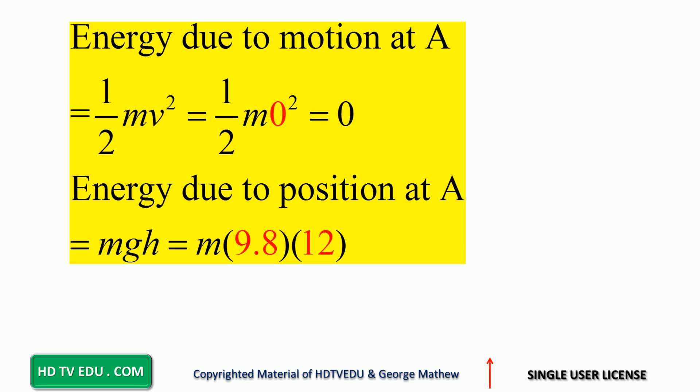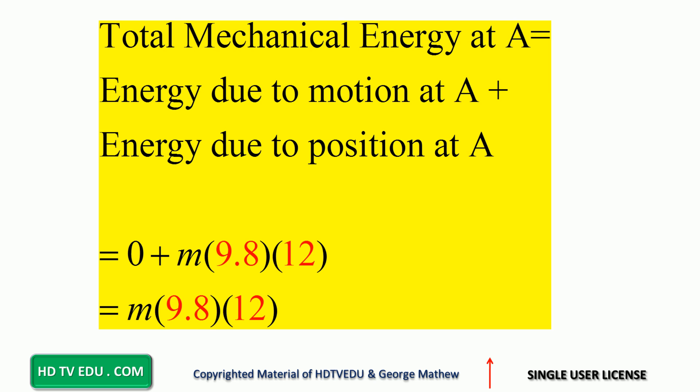Energy due to motion at A is zero because velocity is zero, so one half m times speed squared equals zero. Energy due to position at A is mgh. Acceleration due to gravity g is 9.8 meters per second squared, and h is 12 meters. So energy due to position at A is m times 9.8 times 12.